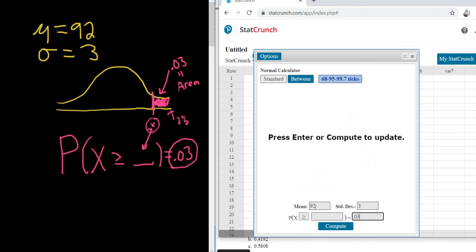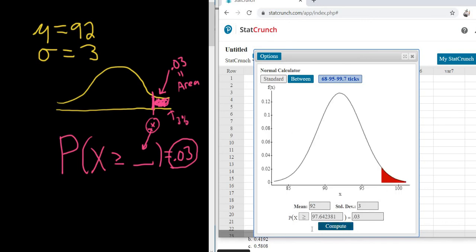So I haven't hit Compute yet, but you see it says 92.03, just like it's written here on the screen. Okay, now Compute, boom, and then now it gives us that number, that little x, that's 97.64. So the answer shows up here, so it's 97.64, so that's this little x.